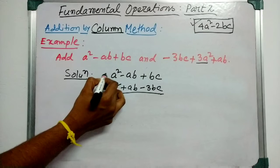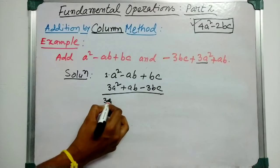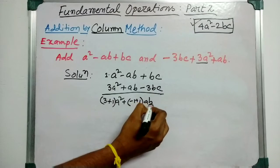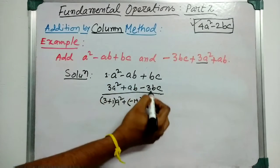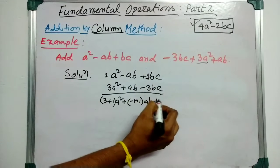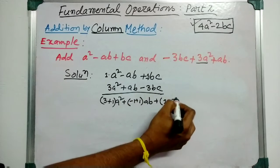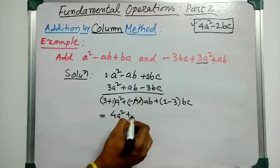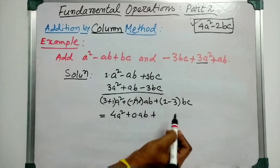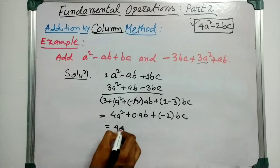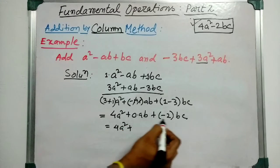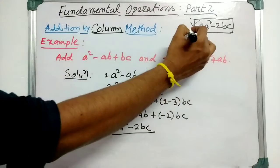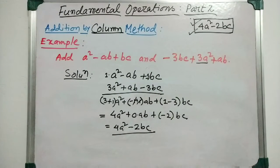Here the coefficient of s² is 1 and of 3a² is 3, so 3 plus 1 gives 4a². For ab, the coefficient is minus 1 and plus 1 respectively; plus in the bracket 1 and minus 3 for bc. So minus 1 plus 1 cancels, giving 0 into ab, which is 0. And 1 minus 3 gives minus 2bc. So the result is 4a² minus 2bc, the same as before.